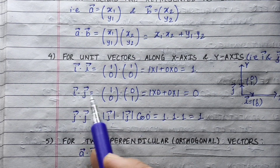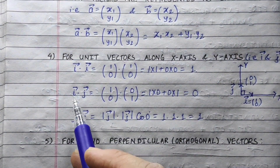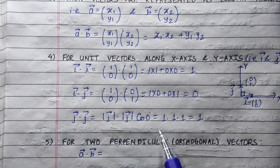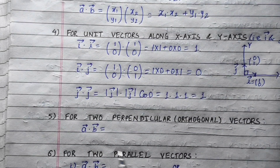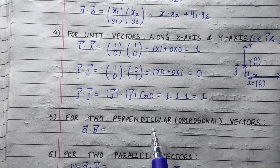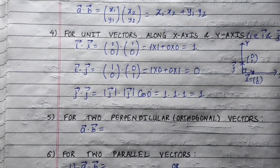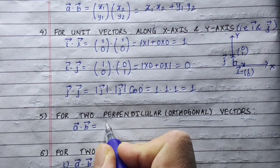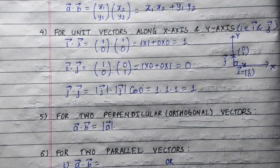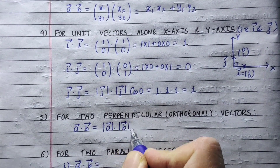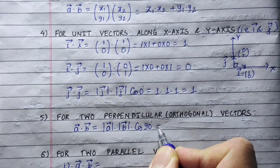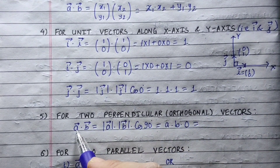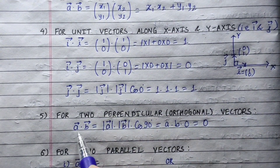For i dot j, the angle is 90 degrees. The magnitudes are both 1, and cos 90 equals 0, so i·j equals 0. When two vectors are perpendicular, the dot product equals zero. That is, if vector A dot vector B equals zero, the vectors are perpendicular.